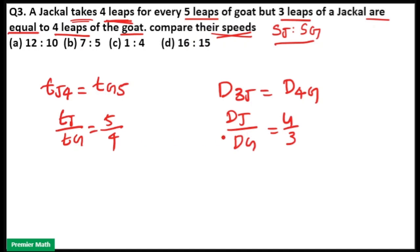If you have time ratio and distance ratio, then speed ratio will be distance by time. That means 4 by 3 into reverse of tJ by tg, that is 4 by 5, equals 16 by 15. Option D is your answer.